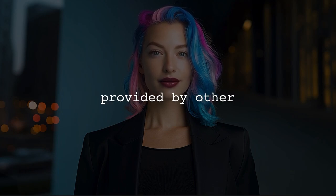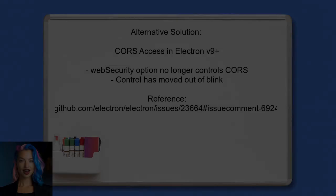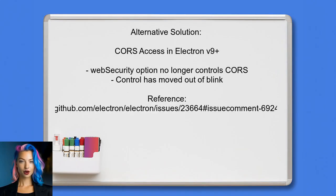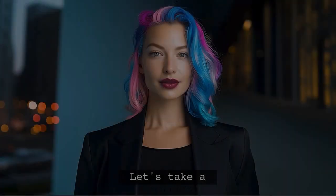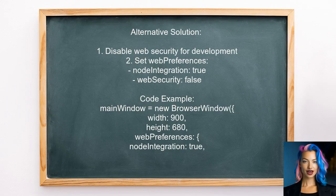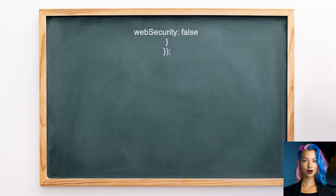Now let's look at the answers provided by other users. An alternative solution suggests that accessing cross-origin resources in Electron may not be possible due to changes in version 9 and above — the web security option, which previously controlled CORS, no longer has that capability. Another user suggests disabling web security in your Electron app by setting the Web Preferences property to allow node integration and disable web security, though this method is noted to be suitable only for development purposes.